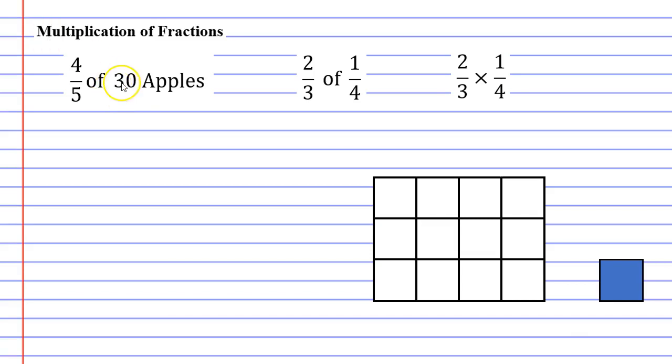So how would you do that? Well, the word 'of' actually means to multiply. So we would simply go four-over-five times 30, and that will tell us what four-fifths of 30 is. In later videos, I will show you how to do this.